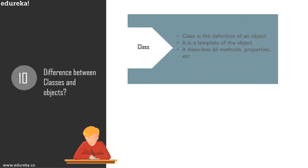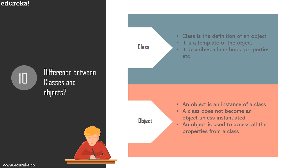Question 10: difference between classes and objects. A class is a construct that defines a collection of properties and methods in a single unit which does not change during execution. Objects are created and eventually destroyed during execution and only live for a short time. A class is created once; objects are created from the same class as many times as required. No memory is allocated for a class when created, while memory is allocated for an object when it is created.